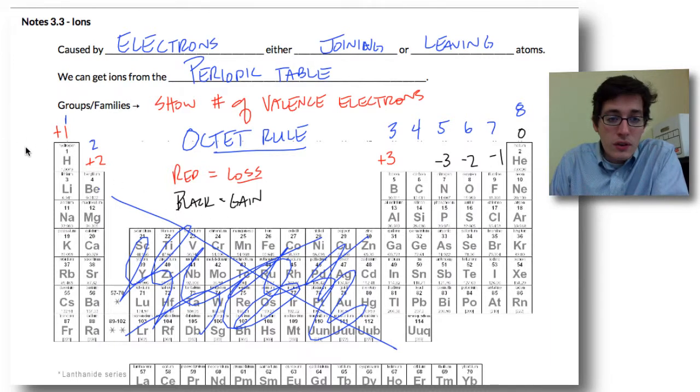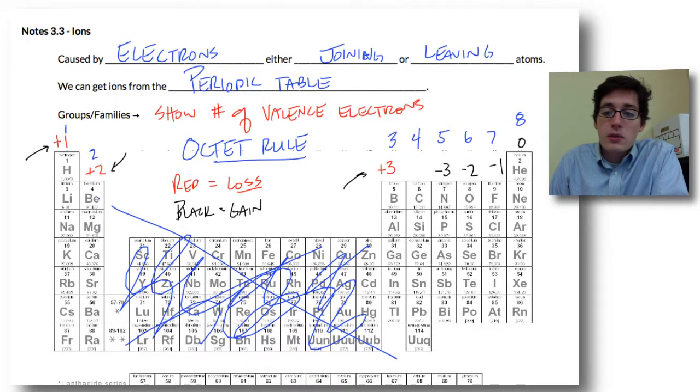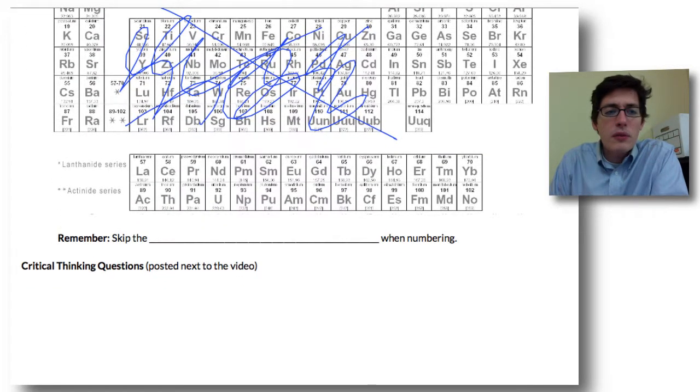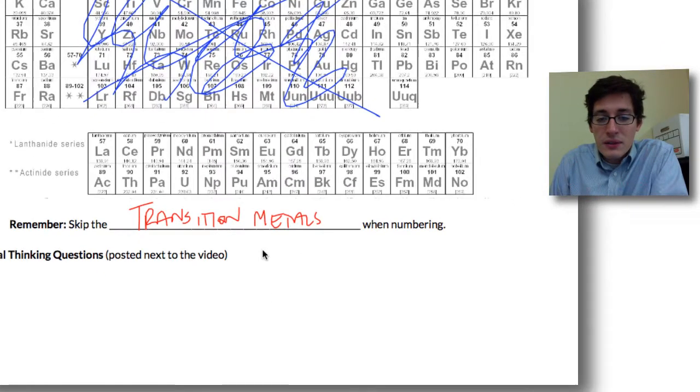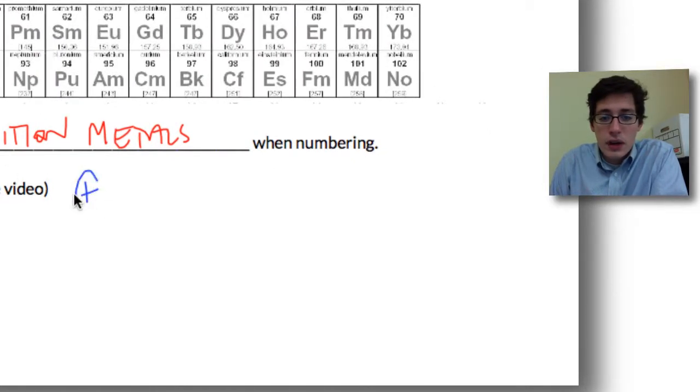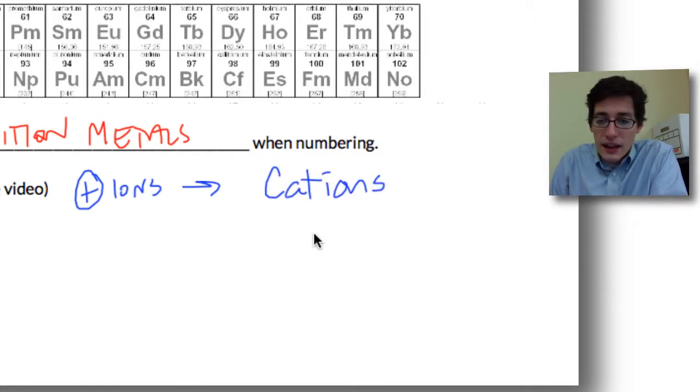Now there's a couple vocab words we need to add. Remember, we skip the transition metals when you are doing your numbering. If you don't skip them you need to subtract 10 - we're not even going to get into that, so just skip these middle ones. Positive ions - atoms with a positive charge - are called cations, C-A-T-I-O-N-S. Cation has a little T in there which looks like a positive sign, so remember the T means positive.